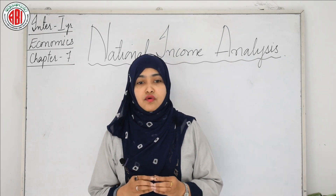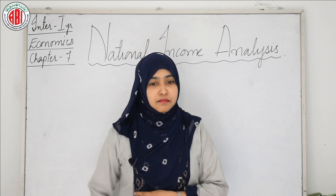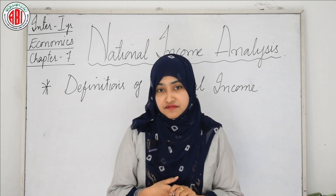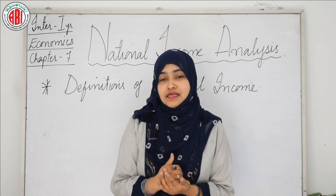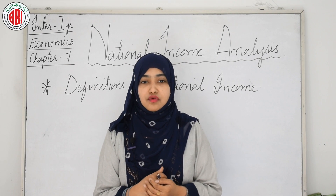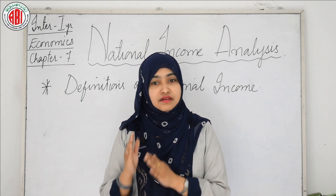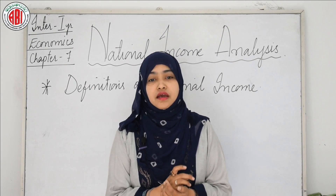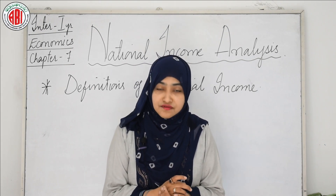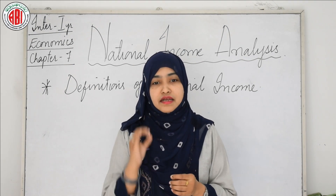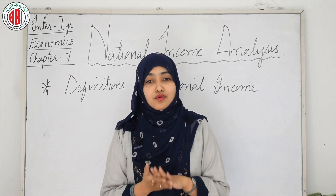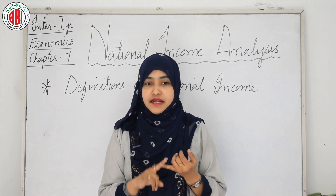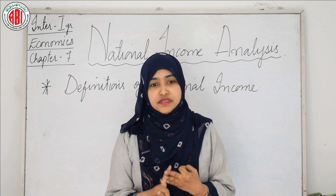Now first we will go with the definitions of national income. The national income has been defined in a number of ways. National income is the total market value of all the final goods and services produced annually in a country. The total income accruing to a country from the various economic activities in a year is called national income. It includes payments made to all factors of production in the form of rent, wages, interest, and profits.